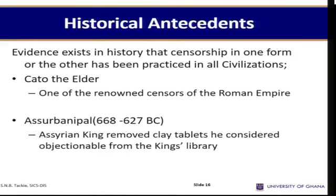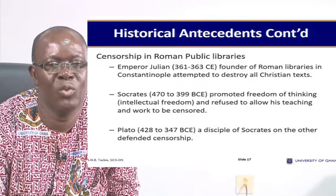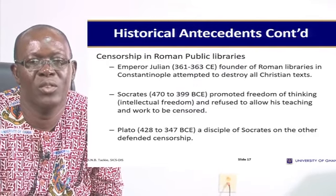There are historical antecedents of censorship evident across previous stages of civilizations. Cato the Elder was one of the renowned censors of the Roman Empire. Ashurbanipal, who reigned between 668 to 627 BC, was an Assyrian king who removed clay tablets he considered objectionable from the king's library. Emperor Julian, who reigned between 361 to 363 AD, founder of Roman libraries in Constantinople, attempted to destroy all Christian texts. Socrates promoted freedom of thinking but refused to allow his teaching to be censored. Plato, a disciple of Socrates, actually defended censorship.